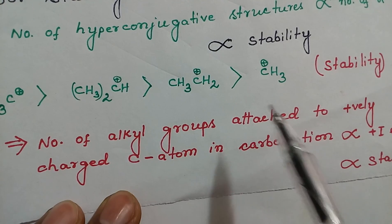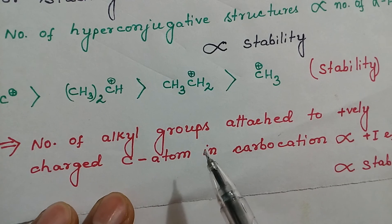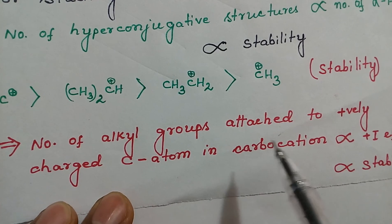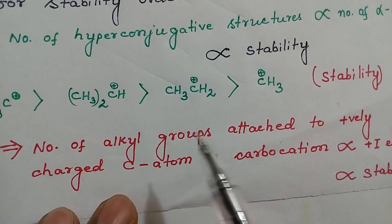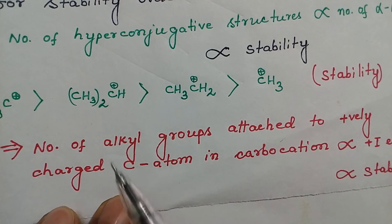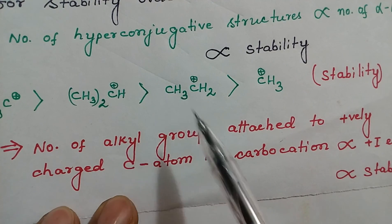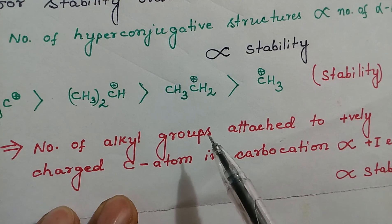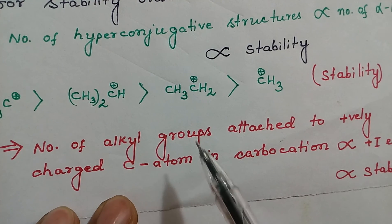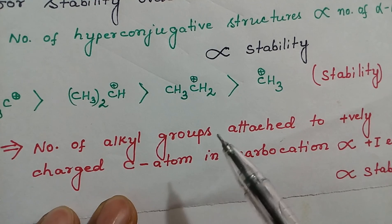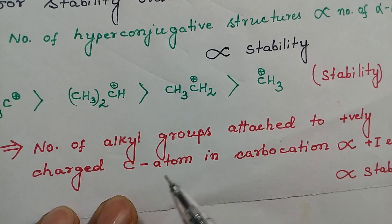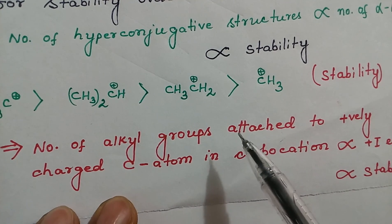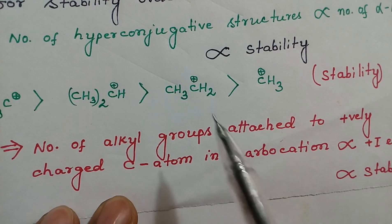The number of alkyl groups attached to the positively charged carbon also decides its stability. If a carbocation has more R groups attached to it, they exert a greater +I (inductive) effect, and hence the stability of the carbocation will be more. Fewer R groups attached to the positively charged carbon means less +I effect and less stability. Thank you.